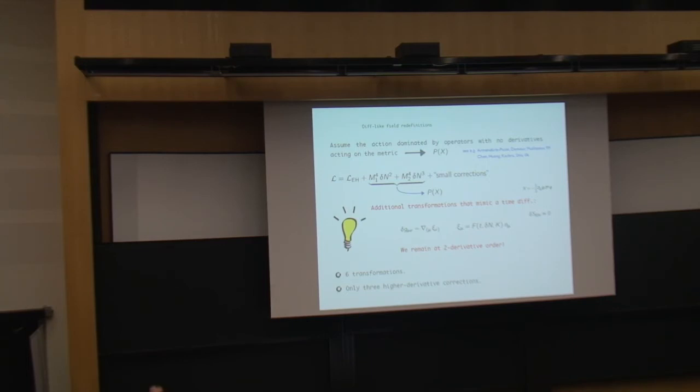In this situation, we have six additional field redefinitions that we can perform that mimic a time diffeomorphism, so they are of this sort, and they do not change the Einstein-Hilbert action, but they act on the operators with zero derivatives. So, we can still stay at second order in derivatives. So, in this case, what we found is that the small corrections after the field redefinitions consist of just three higher derivative operators.